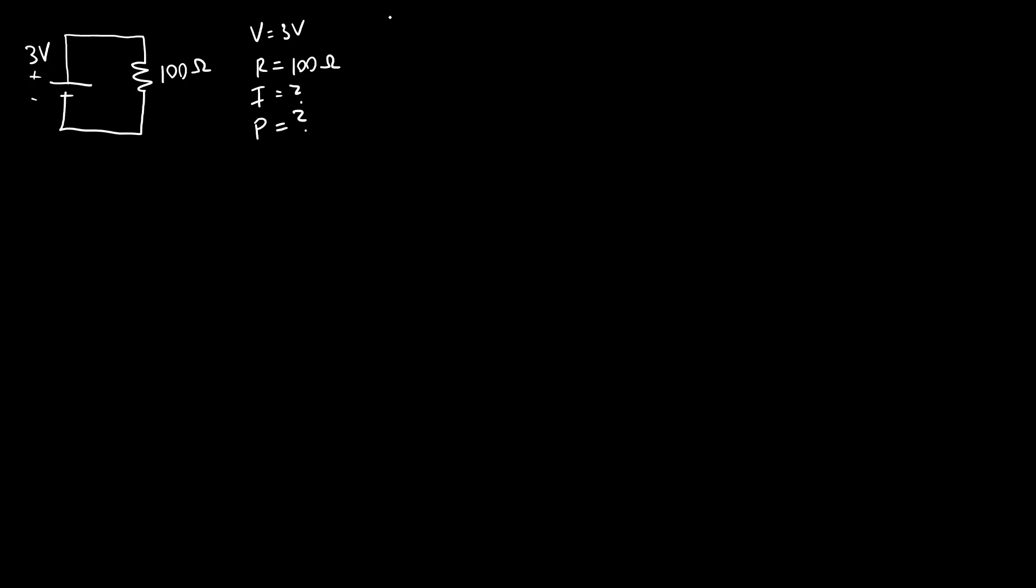Remember that we have three different forms of that power equation. We have P equals IV, P equals I squared R, and P equals V squared over R. All of these are based on the same thing, just substituting Ohm's Law into this equation to give some slightly different forms. The easiest thing to do here is to find the version of the equation that has the variables we already know. We are given the voltage and the resistance. This is a simple circuit,